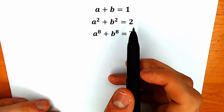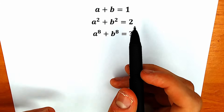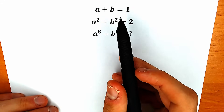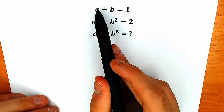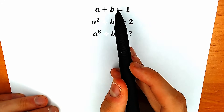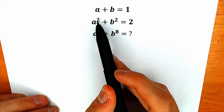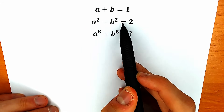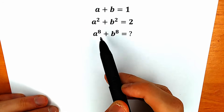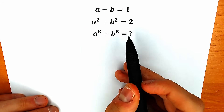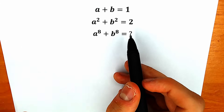A lot of students may be saying, hey mister, this is the easiest question I've ever seen. We have first power here — a and b — equal to 1, the second power equal to 2, so the answer is 2, and here we have 8th power, so the answer will be 8.